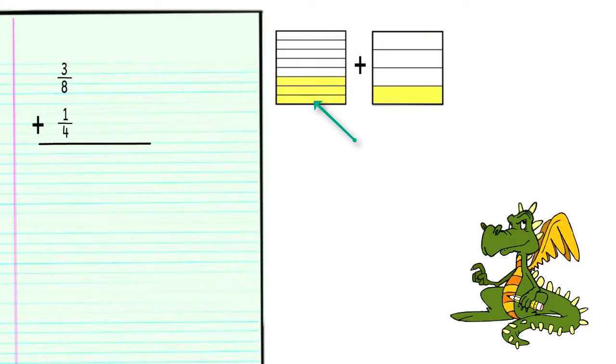By looking at the tile pieces, we can see that 1 8th is half the size of 1 4th. But to add fractions, we must be working with the same sized pieces. Therefore, we need to get common denominators.